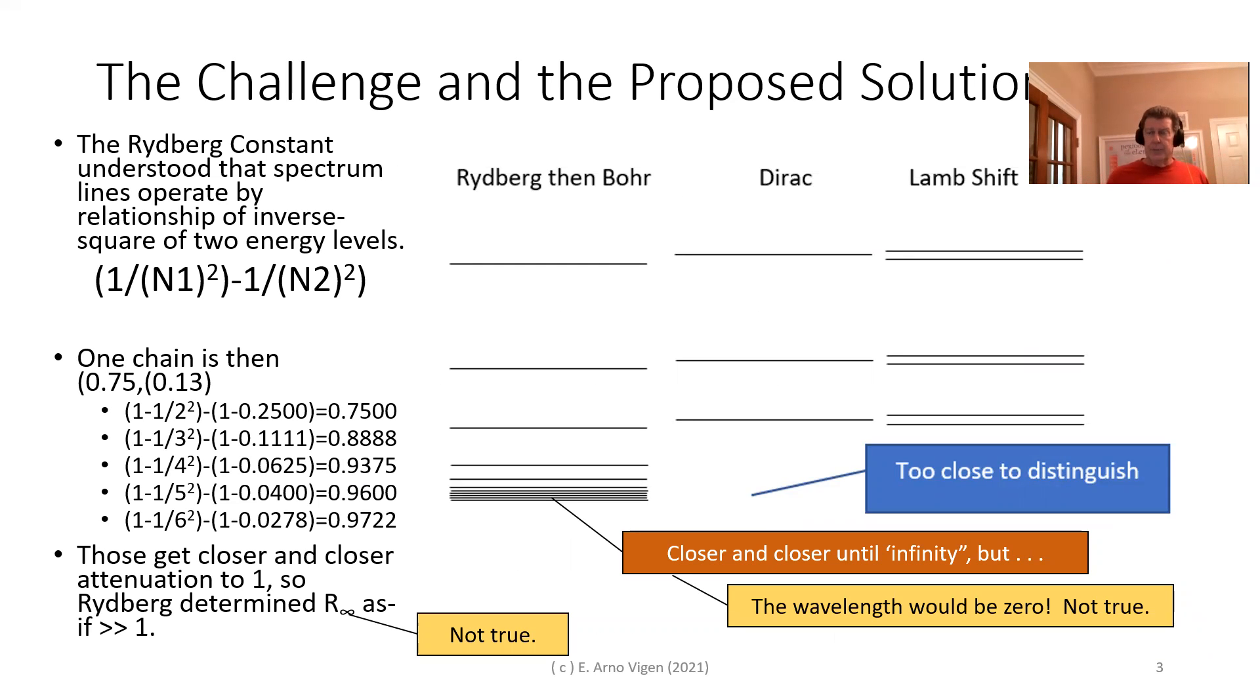We know what Rydberg is. It's a set of spectrum lines, and we've seen these spectrum lines. Basically, Rydberg and then Bohr put together these lines based upon 1 over 1 integer squared minus 1 over a second integer squared, and you get these spacings. Obviously, as that N-squares becomes 10, 20, 30, 40, these become closer and closer until others. And Rydberg and Bohr both said, well good, eventually they're going to come to infinity.